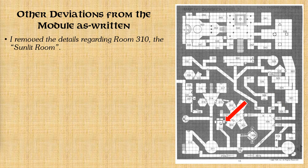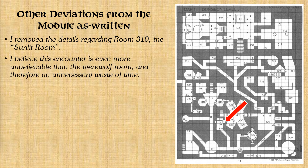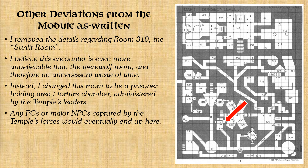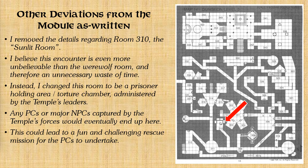Moving on to level three, specifically room 310, the so-called sunlit room — in my opinion, this encounter is even more unbelievable than the werewolf room and is really just a big waste of time. Instead, I changed this room to be a prisoner holding area slash torture chamber, which is run by the temple leaders. Any characters or major NPCs that might be captured by the temple forces in the course of the adventure would eventually end up here, where they'd be held for questioning by the temple leaders — which could lead to a fun and challenging rescue mission.